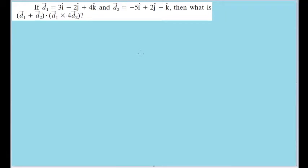In this problem, we're given a fairly straightforward task. Given these two vectors, d1 and d2, we have to perform this long operation of them, consisting of a vector sum, a cross product, followed by a dot product between those two results.